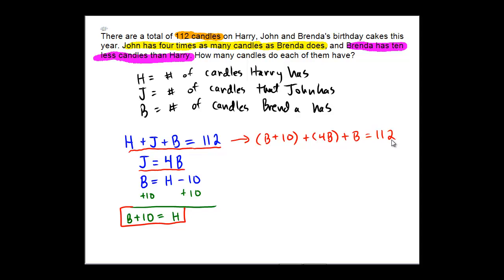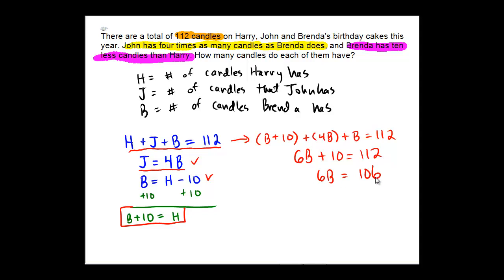We've substituted into the first equation leaving us with only the variable b, so now we can perform typical algebra. b and 4b is 5b, and there's another b, giving us 6b plus ten equals 112. Subtract ten from both sides: 6b equals 102. Divide both sides by 6, and b equals 17. So Brenda has 17 candles on her cake.